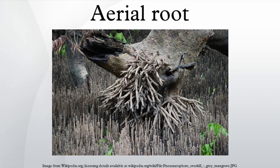Aerial roots as supports: non-parasitic ivy are vines that use their aerial roots to cling to host plants, rocks, or houses. Prop roots form on aerial stems and grow down into the soil to brace the plant, for example maize and screw pines.